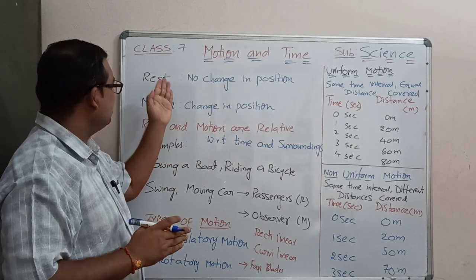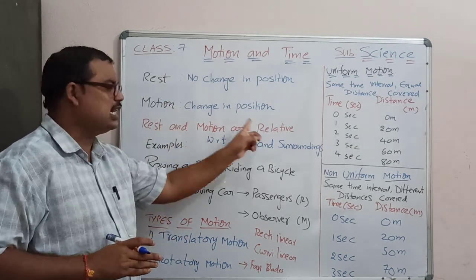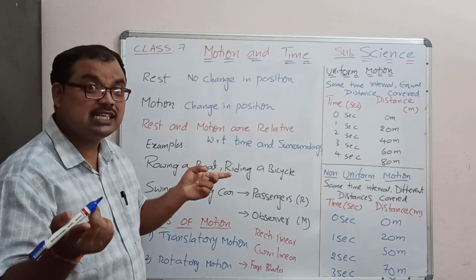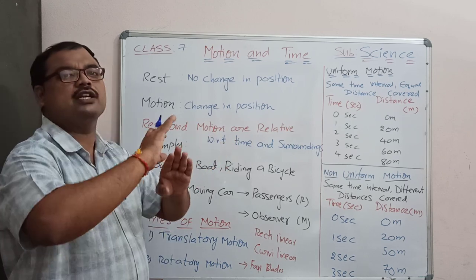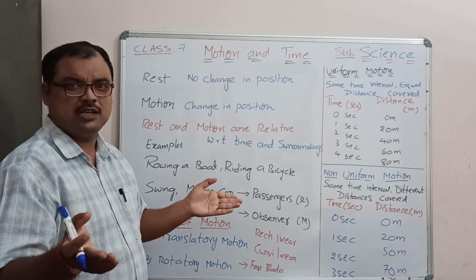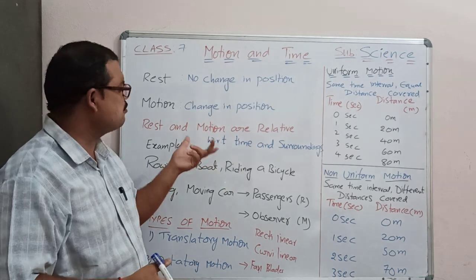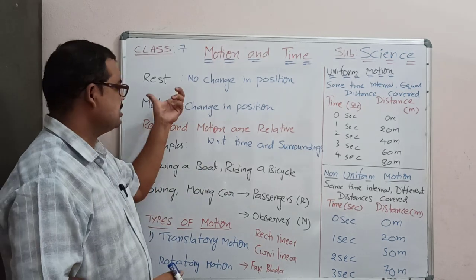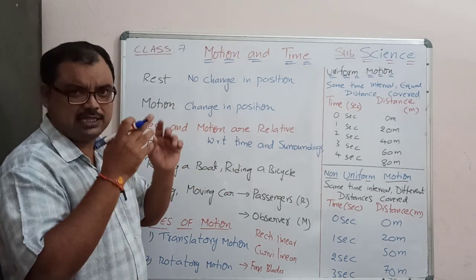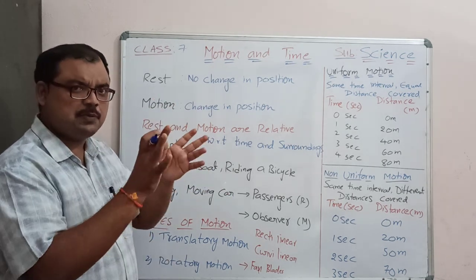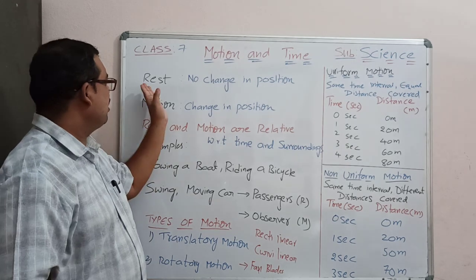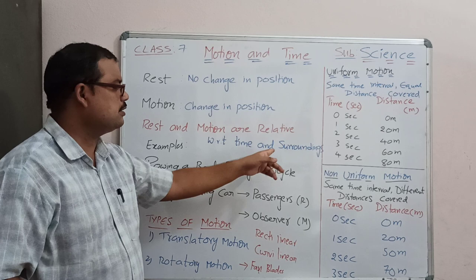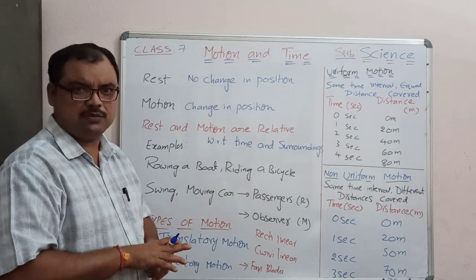That is why we say these two are relative — comparable quantities. How can we compare? What is the definition of rest and motion in science? With respect to our science, rest means no change in the position with respect to time and surroundings.